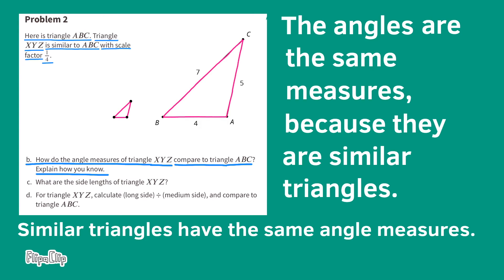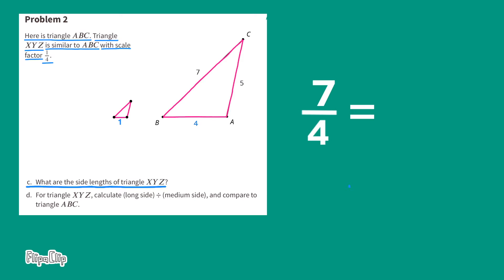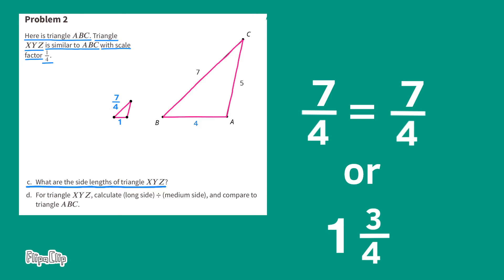Part B: How do the angle measures of triangle XYZ compare to triangle ABC? The angles are the same measures because they are similar triangles — similar triangles have the same angle measures. Part C: What are the side lengths of triangle XYZ? The corresponding side lengths will be 4 times smaller. 4 divided by 4 equals 1, so one corresponding side length is 1 unit. 7 divided by 4 is 1 and 3 fourths, and 5 divided by 4 is 5 fourths.